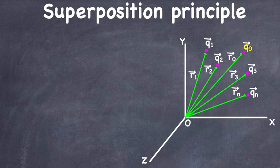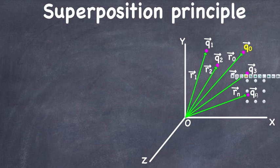The force between two charges, say Q naught and Q1, or Q naught and Q2, is not affected by the presence of other charges. So let's say we have point charges Q1, Q2, Q naught, Q3, and unknown charges up to QN, and we take Q naught to be our test charge.